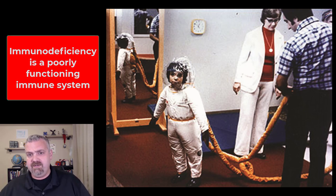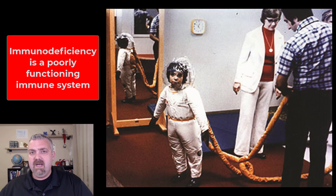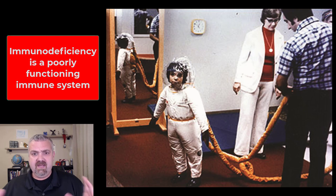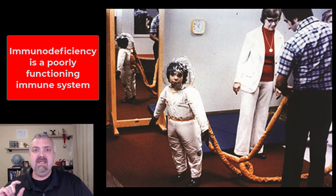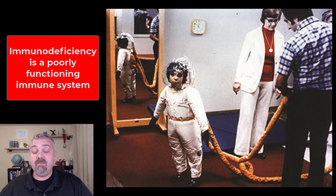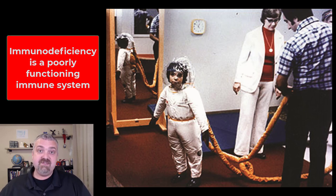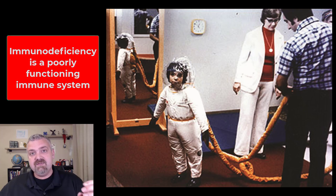Immunodeficiencies can be either primary or acquired. The primary example I think of is the bubble boy — the boy in the plastic bubble. There was actually a movie John Travolta made where he played this boy, who was usually sealed off in a room. This was a special suit NASA developed so he could go out. He had SCID — Severe Combined Immune Deficiency — he simply didn't have an immune system. That would be a primary immunodeficiency. There are also acquired immunodeficiencies — you've definitely heard of AIDS, the Acquired Immune Deficiency Syndrome, which is caused by the HIV virus.